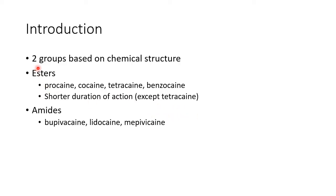Local anaesthetic agents are divided into two groups based on their chemical structure. These two groups are esters and amides. Examples for esters include procaine, cocaine, tetracaine and dedocaine. Esters have a shorter duration of action except tetracaine.